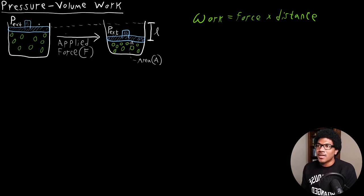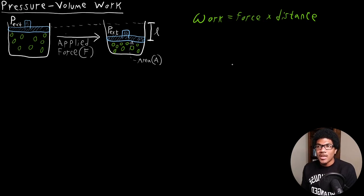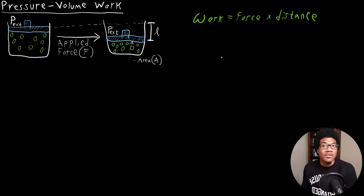If you were to come in and push down on that piston, so we have some applied force, it would push that piston down by some distance L. This piston has some circular area that we'll refer to as A. We can build up a differential equation that will define the change in work in this scenario.